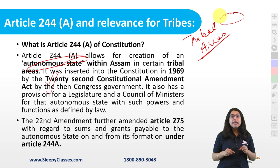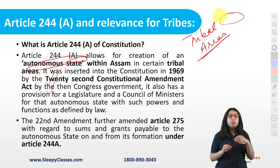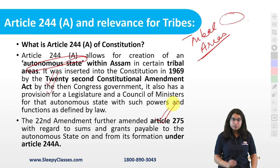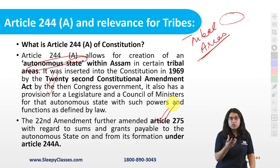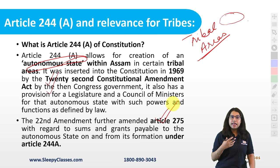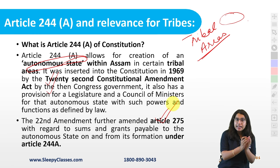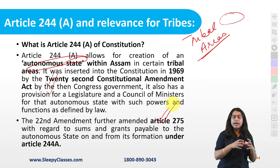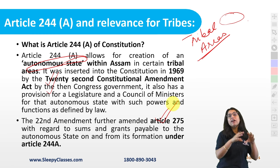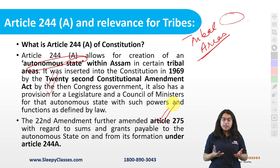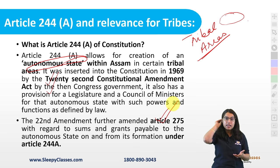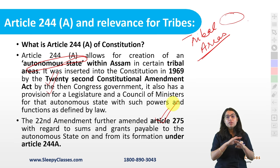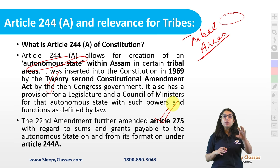Furthermore, the same 22nd Amendment also brought another change. It amended a pre-existing Article 275, which deals with the payment of certain sums and grants. They amended Article 275 to say that whenever an autonomous state is created as per Article 244A, decisions will be taken about the amount of money required for that autonomous state to function, and that money — in the form of grants and certain sums — will be provided to this autonomous state. After all, if you create an autonomous state without financial resources, how will it function?